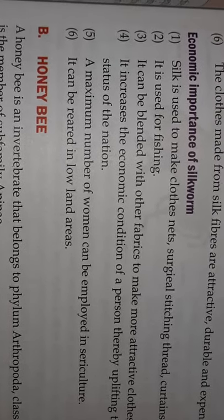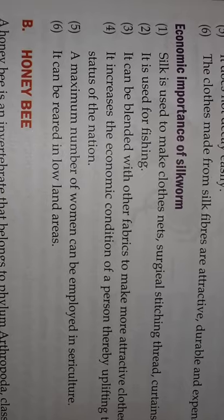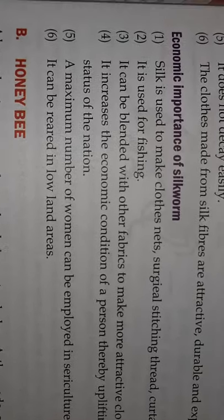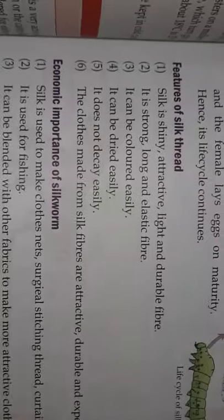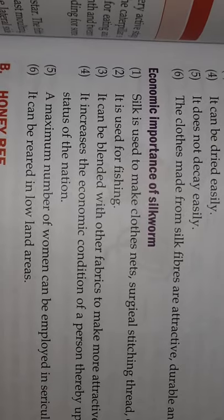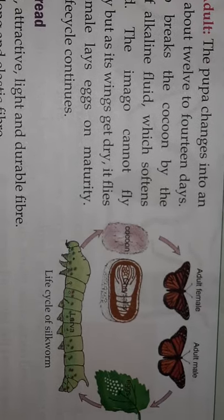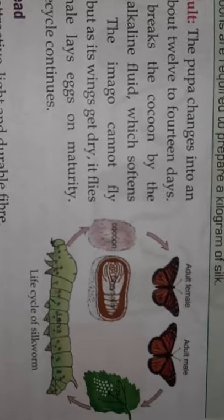Economic importance: silk is used to make clothes, nets, surgical suturing thread, and curtains. It is also used for fishing. The maximum number of women can be employed in sericulture, and it can be reared in lowland areas. For your exam, the important questions are: describe the life cycle of the silkworm, what are the features of silk thread, and what is the economic importance of silkworm. Today we covered silkworm; tomorrow we'll continue with honeybee.